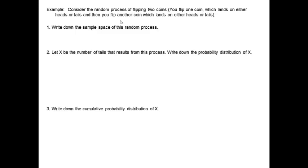Consider the random process of flipping two coins. You flip one coin which lands on either heads or tails, and then you flip another coin which lands on either heads or tails. Write down the sample space of this random process.